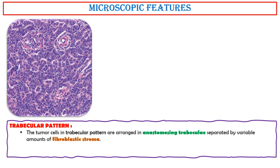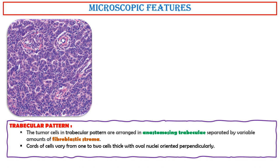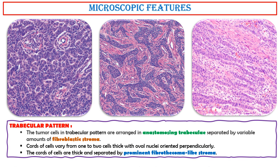Trabecular pattern. The tumor cells in the trabecular pattern are arranged in anastomosing trabeculae, separated by variable amounts of fibroblastic stroma. Cords of cells vary from one to two cells thick, with elongated nuclei oriented perpendicularly. The cords of cells are thick and separated by a prominent fibrothecomatous-like stroma, as seen in these photos.